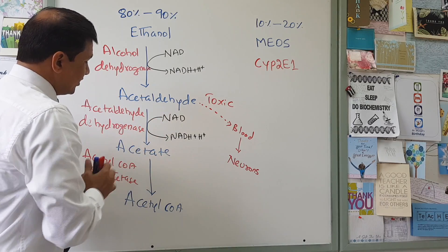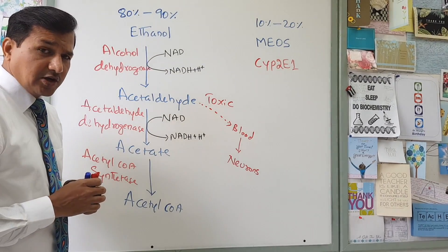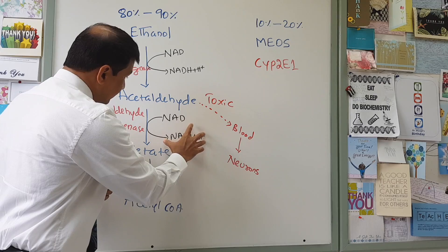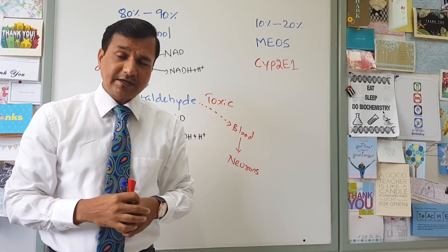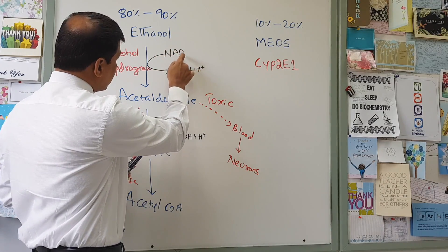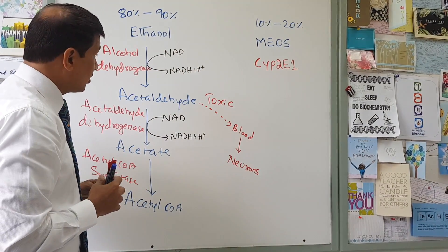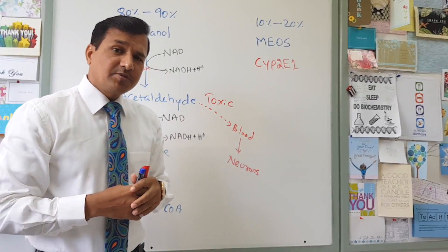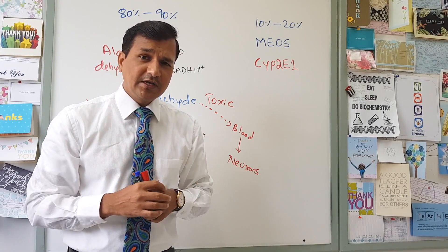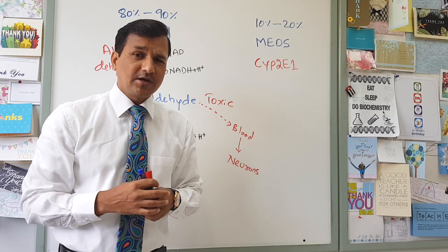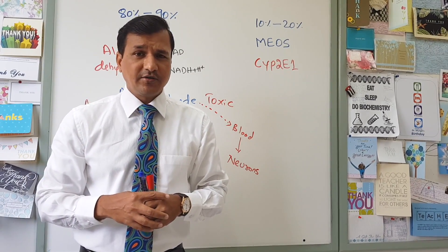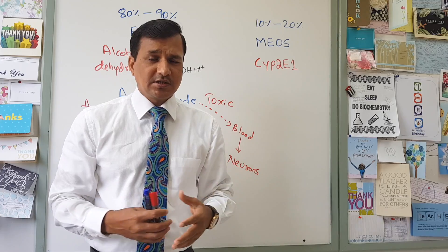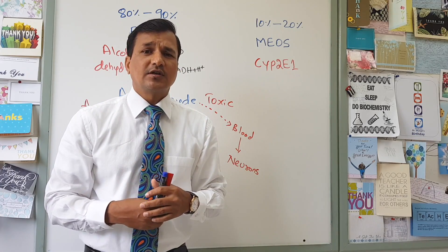Acetaldehyde converting into acetate and alcohol converting into acetaldehyde leads to elevated levels of NADH plus H+ in the cytoplasm and in the mitochondrial matrix. There will be a shortage of NAD+ because NAD+ is continuously consumed in alcohol metabolism, making more and more NADH plus H+. The NADH to NAD+ ratio increases, and this excess NADH in the mitochondria and cytoplasm will alter the metabolism of our cells, leading to changes in metabolic pathways and certain consequences.